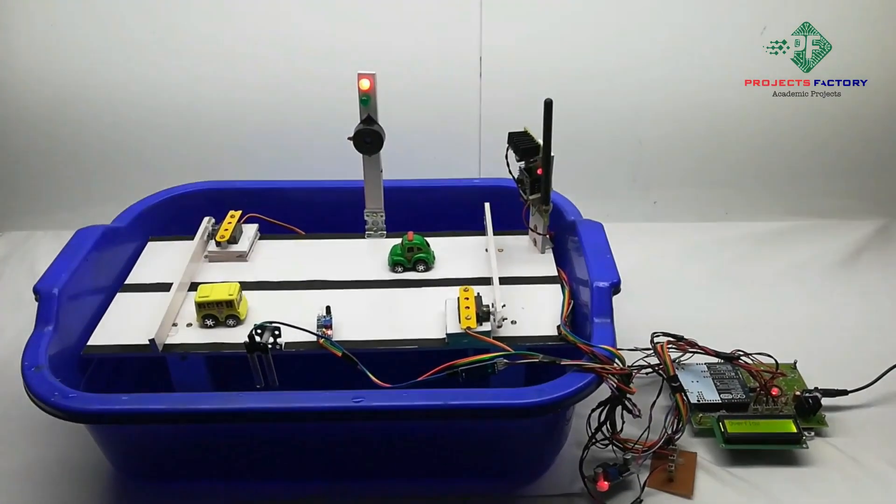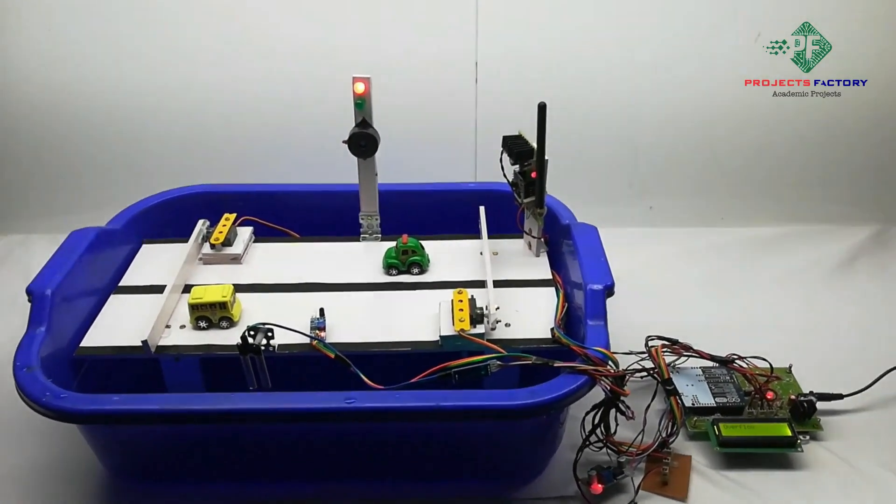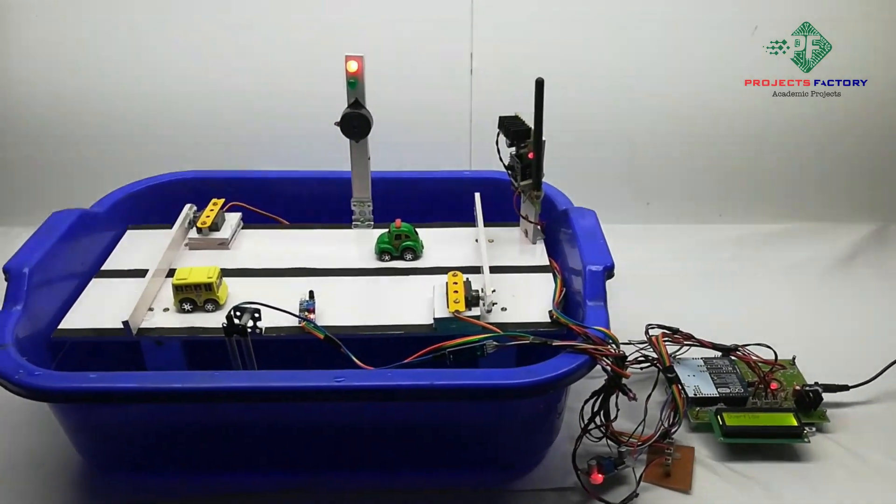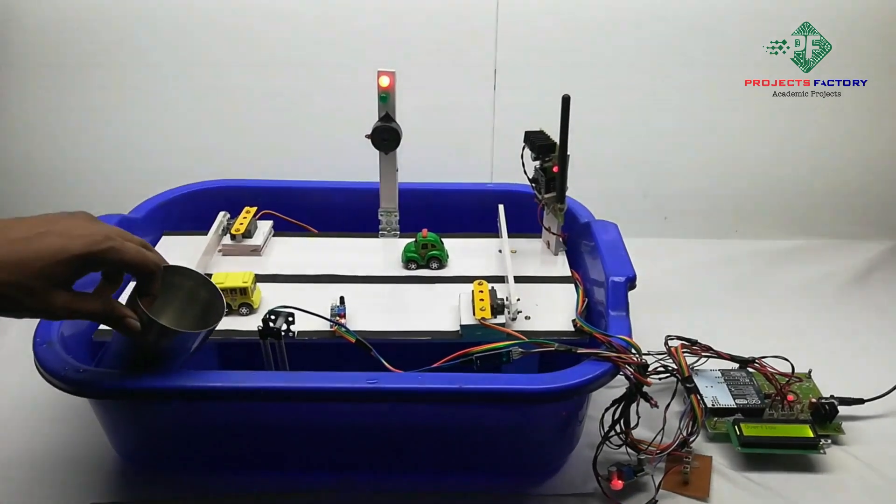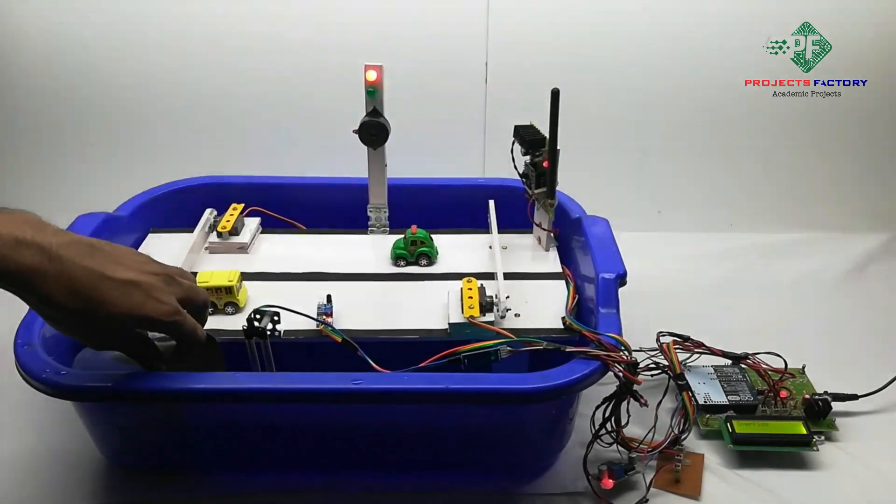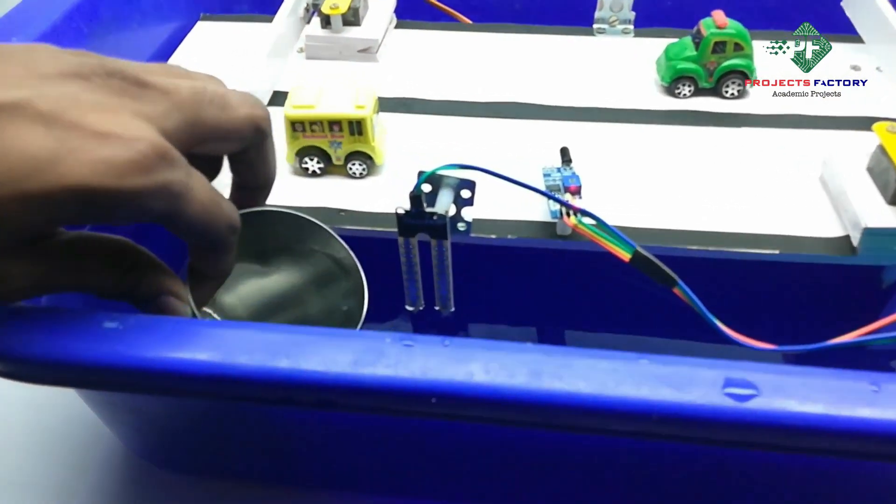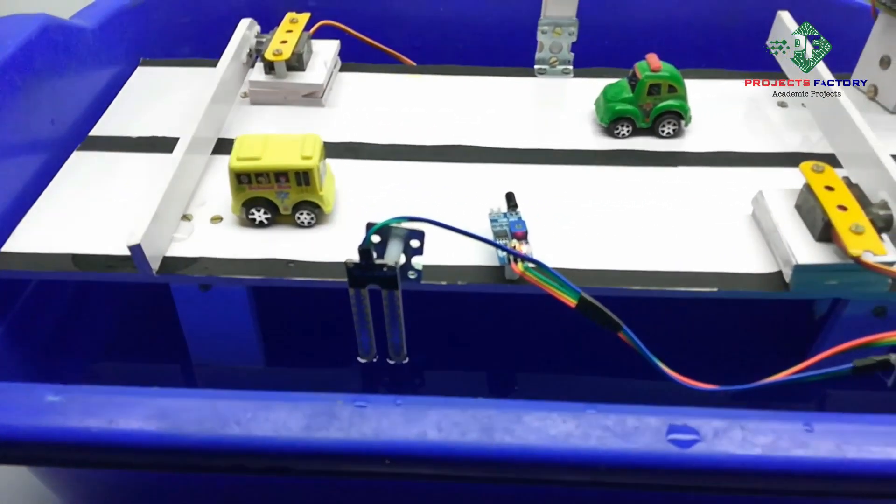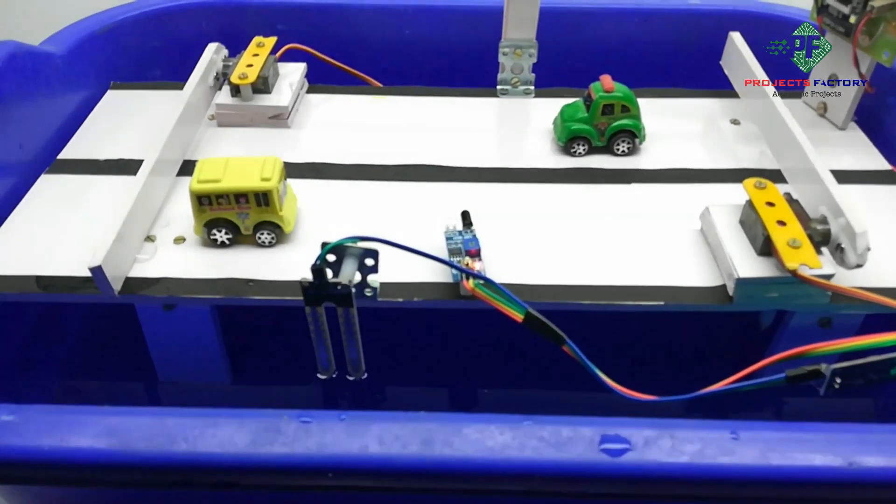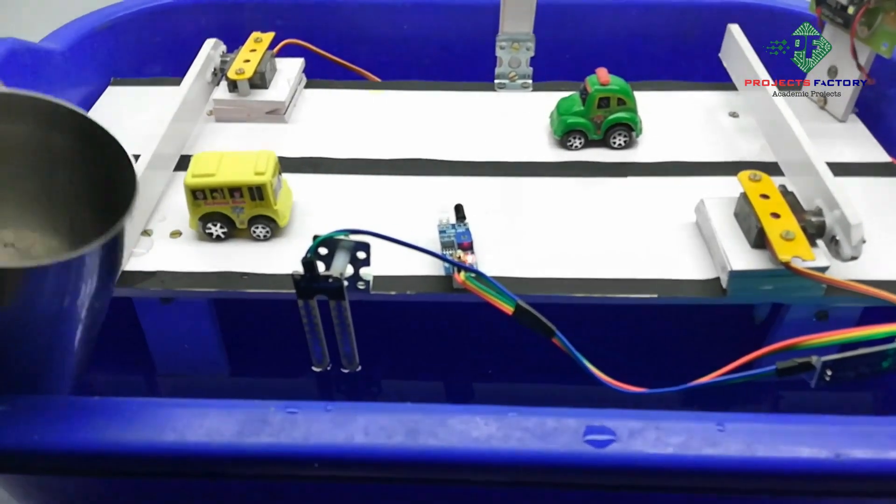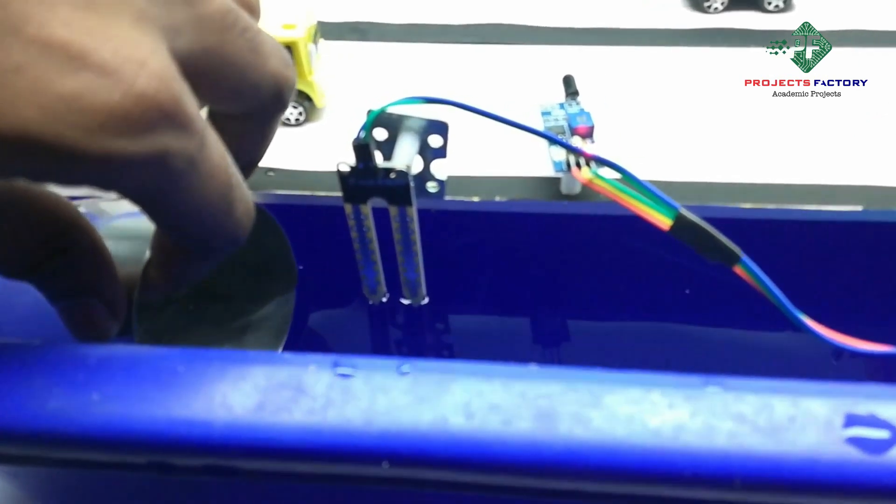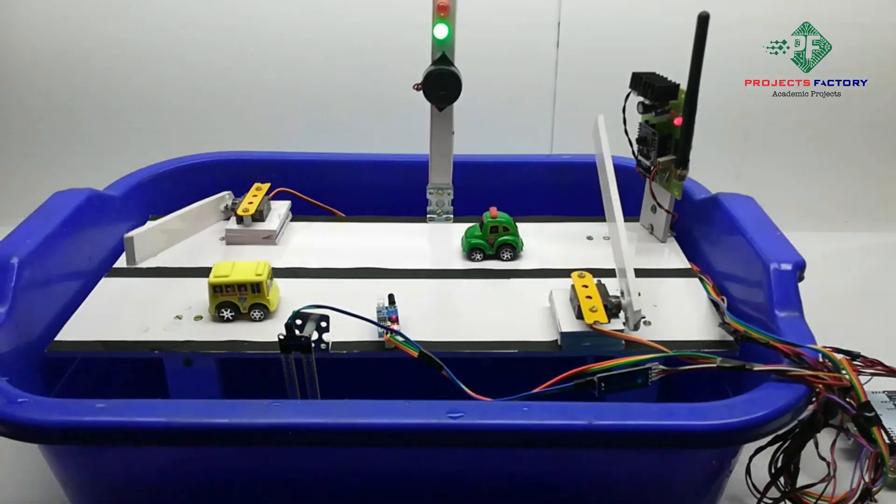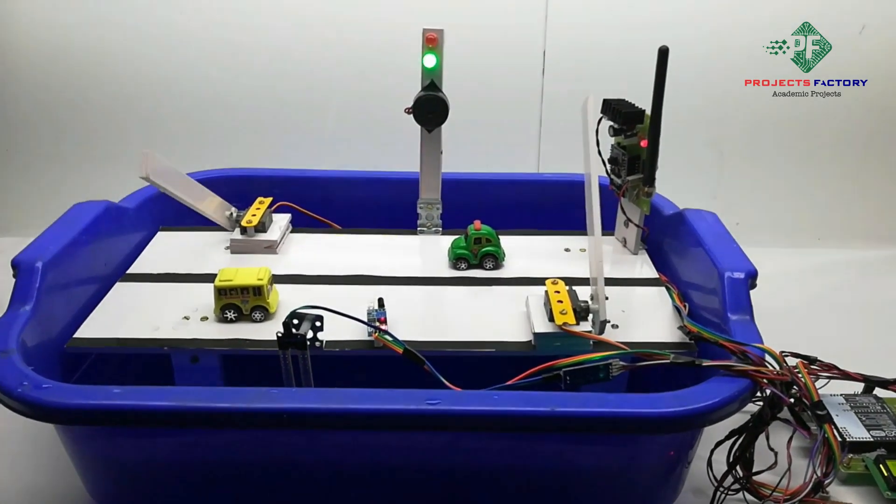If the flood level is decreased then automatically gates will be open. Green LED on, gates are open.